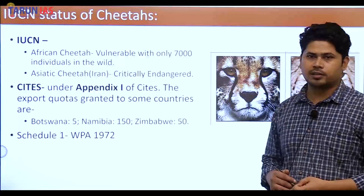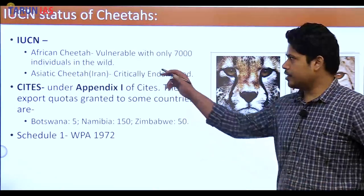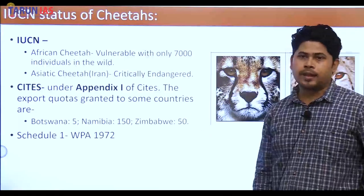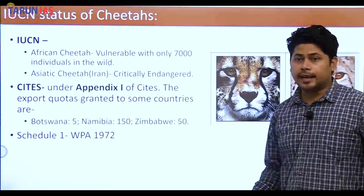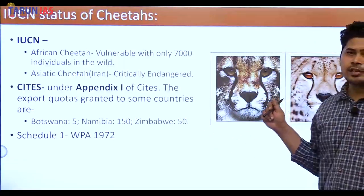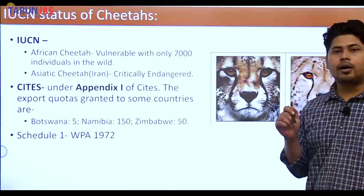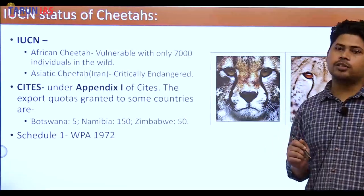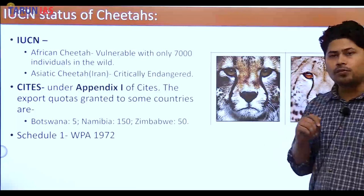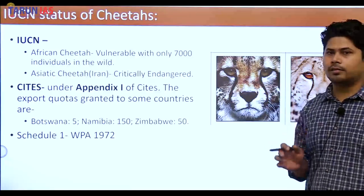The African cheetah is listed as Vulnerable by the IUCN, with around 7,000 individual cheetahs in the wild. The Asiatic cheetah has been listed as Critically Endangered, with only around 40 to 50 individual cheetahs remaining in the wild — all of them present only in Iran.